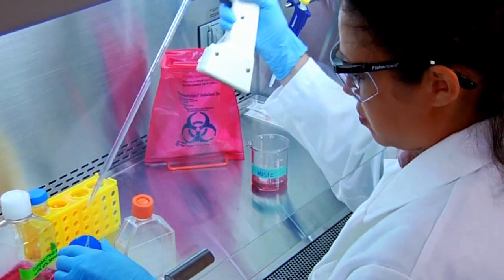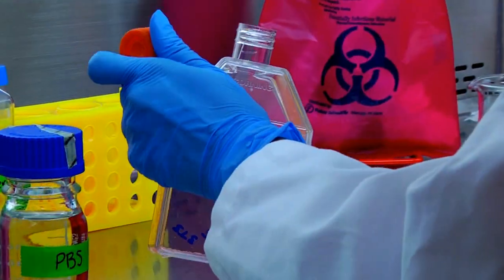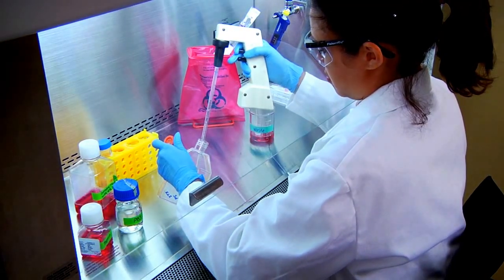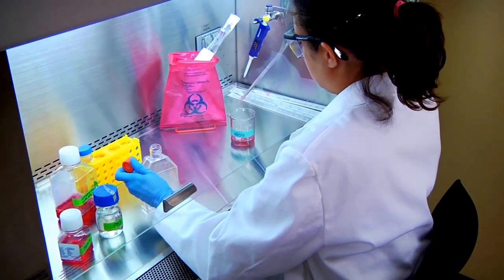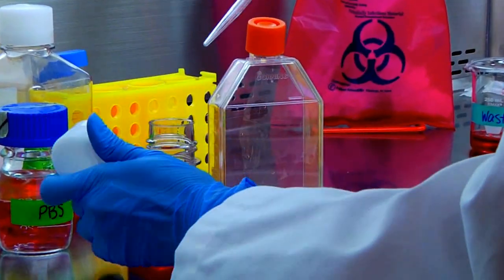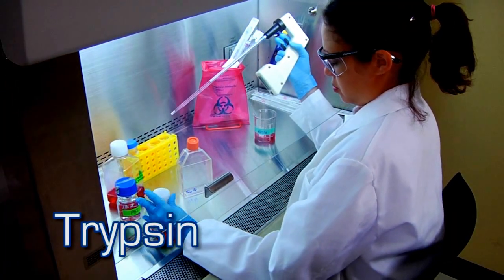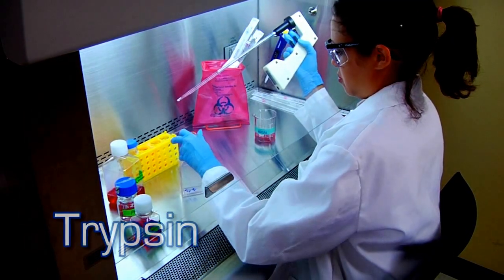Briefly rinse the cell layer with 5 milliliters of sterile PBS to remove all traces of the serum, which contains a trypsin inhibitor. Add 3 milliliters of trypsin solution to the T75 flask.